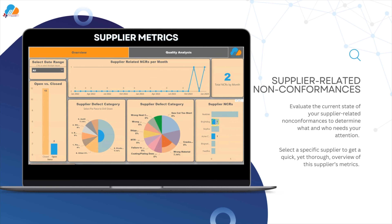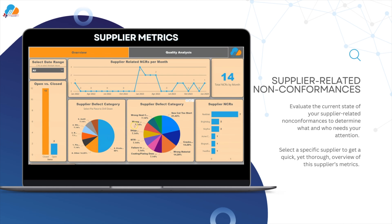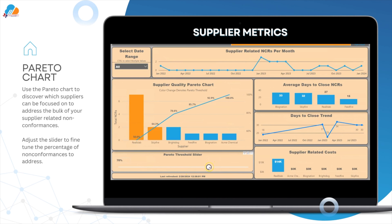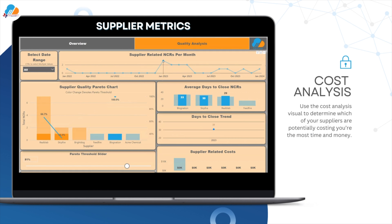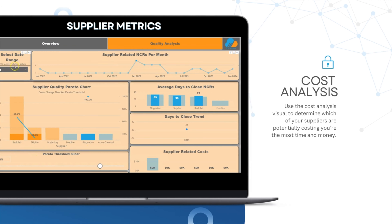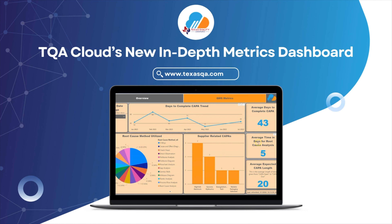Then there's the supplier metrics dashboard. Evaluate the current state of your supplier-related non-conformances to determine what and who needs your attention. Use the Pareto chart to discover which suppliers can be focused on to address the bulk of your supplier-related non-conformances. Use the cost analysis visual to determine which of your suppliers are potentially costing you the most time and money. Thank you for learning about TQACloud's new in-depth metrics dashboard. We hope you enjoy!